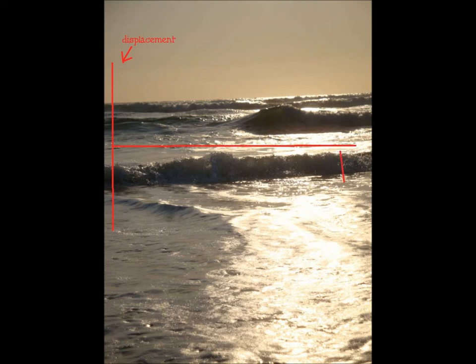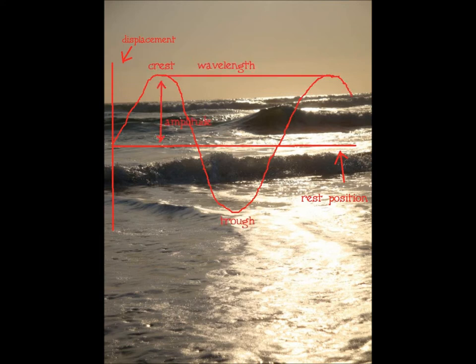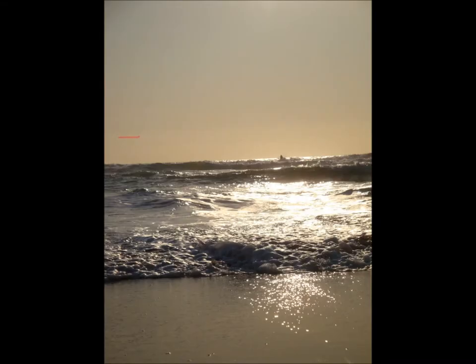Particles in a wave vibrate up and down from rest positions, creating the crest, which is the position of maximum displacement, and trough, which is the position of minimum displacement. Amplitude is the maximum displacement of water from the rest positions.